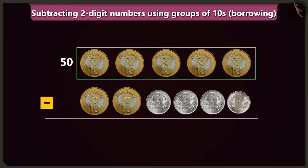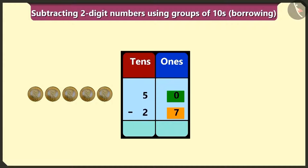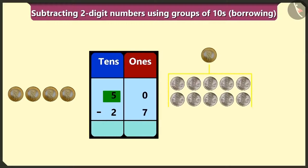Look, fifty means five tens and twenty-seven means two tens and seven ones. Now let's do subtraction after writing them in the boxes of ones and tens. First of all, we will do subtraction of the numbers in the box of ones. But here we cannot subtract seven from zero in the box of ones. So we will borrow one ten from its neighbour, number five, in the place of tens. Now we will write ten ones in place of zero in the box of ones and we will write four tens instead of five tens in the box of tens.